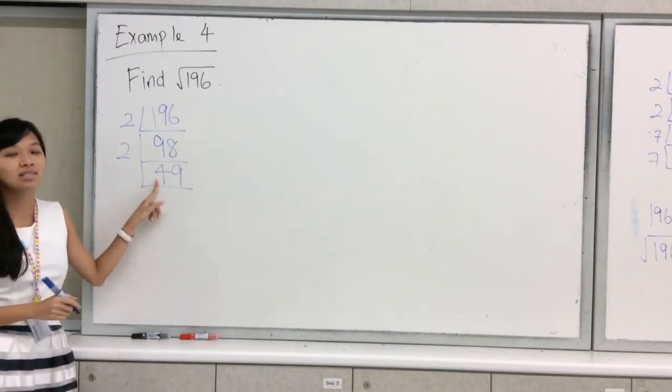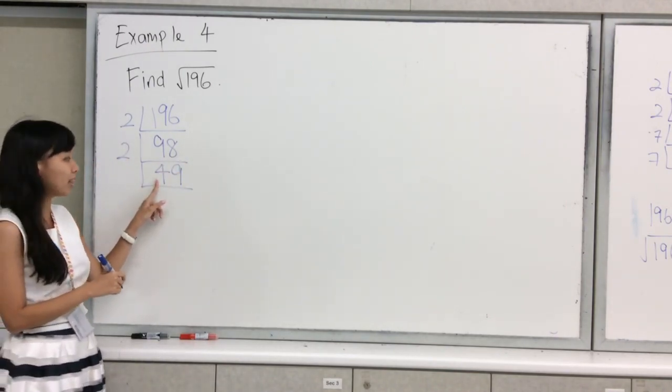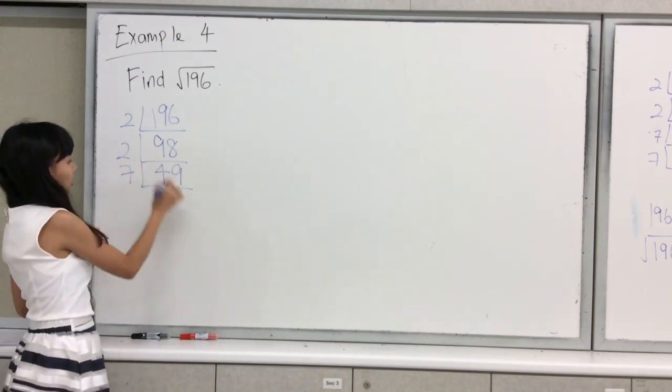The next smallest prime number that can be divided will be 7.